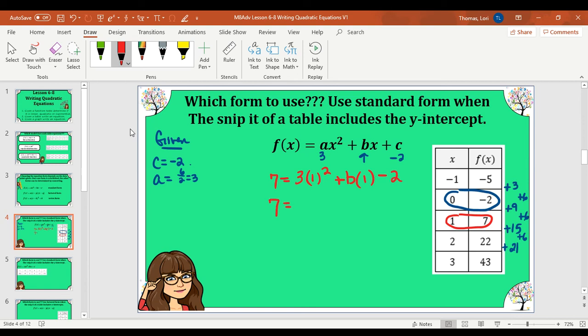So all I did is put in the ordered point 1 comma 7 into my function. So I have all values except for b. And now we'll be able to find the actual value of b. So we're going to do order of operations and simplify this side of the equation. So I have 1 squared times 3, b times 1 minus 2. Let's collect like terms. And I have b plus 1. Now let's get the b by itself. So subtract 1 from both sides. And I have a b value of 6. Now we can write our equation in standard form.